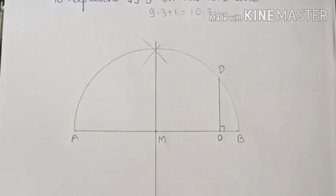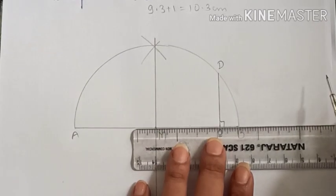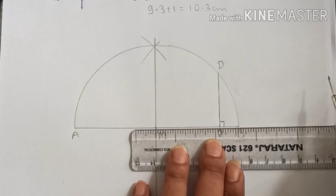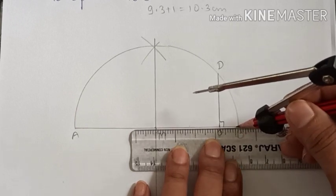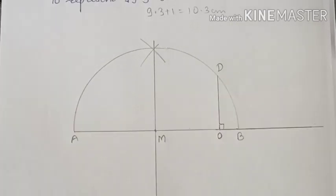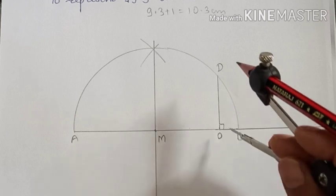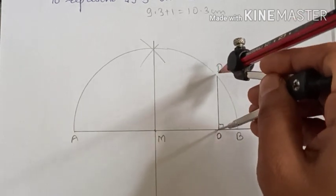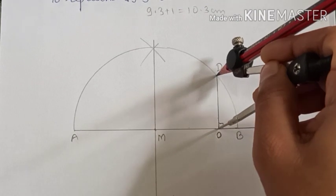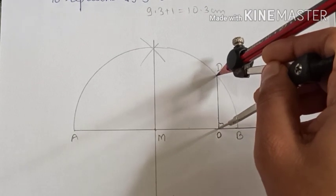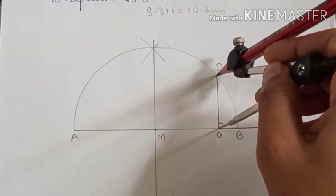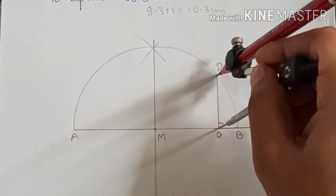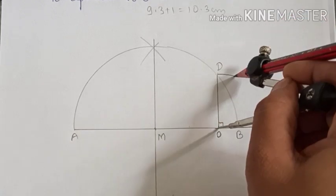Now draw a circle (or semicircle) with M as center and AM as radius. From point O (our zero), draw a perpendicular line up to the circumference of the semicircle — let this perpendicular line be OD. Now extend line AB as our number line.